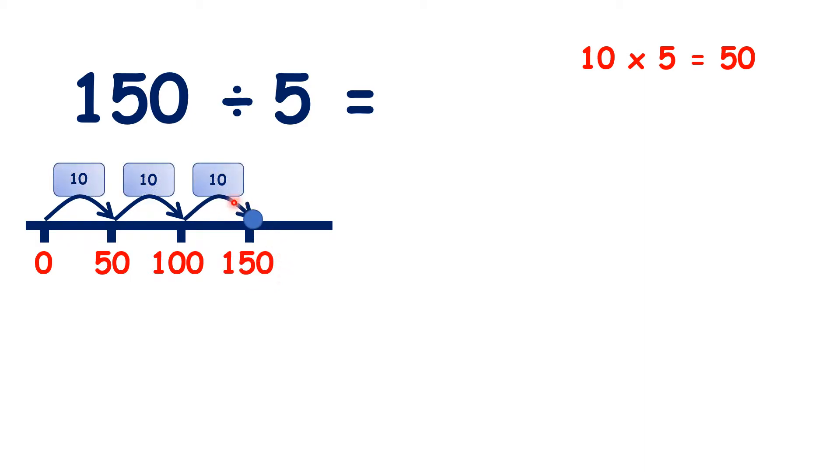So because we counted 3 steps of 10 times 5, we really counted 30 steps. So 150 divided by 5 is 30.